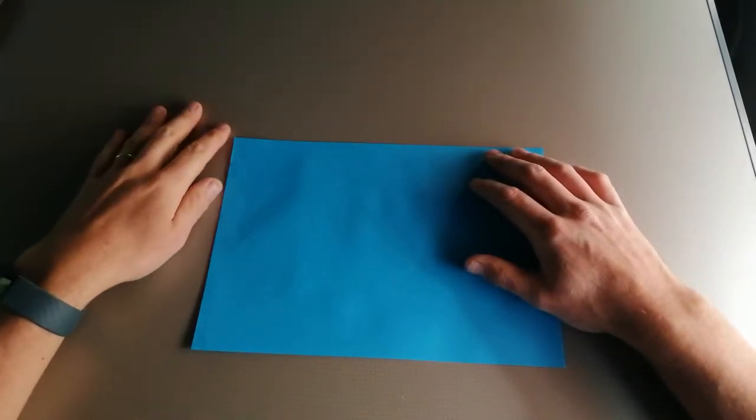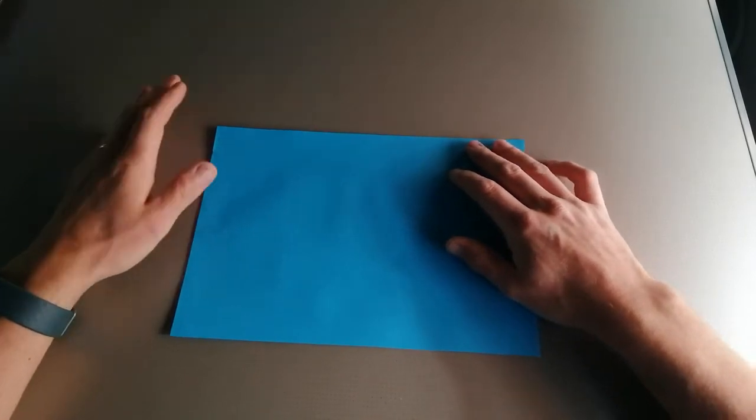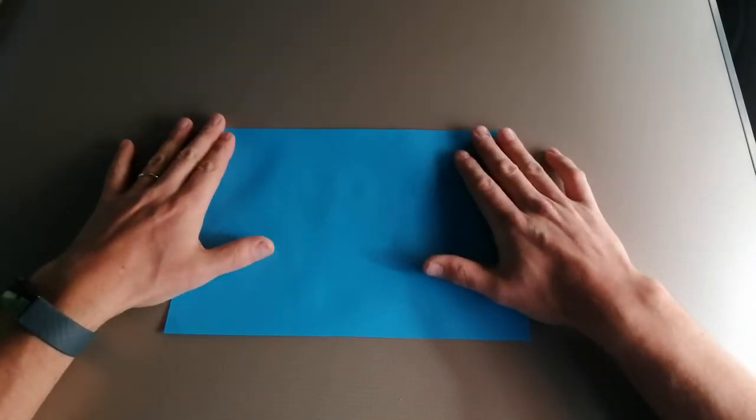Hello and welcome to another video. In this video I'm going to be showing you how to make an origami flapping bird. So to start with, what we're going to need is an A4 piece of paper.